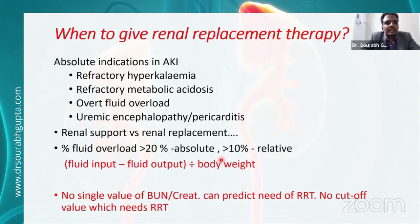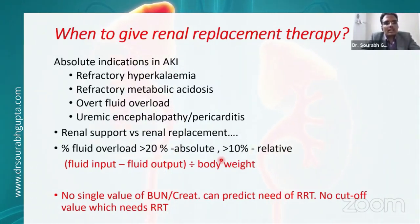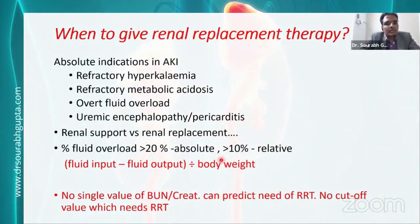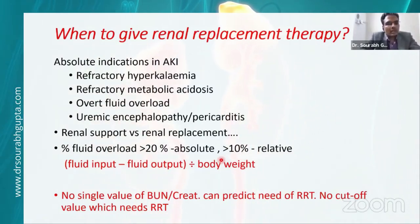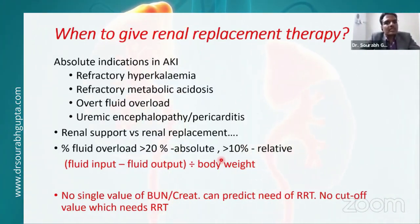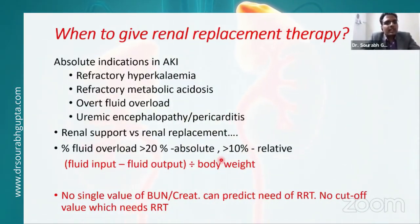Absolute indications for renal replacement therapy are classically: refractory hyperkalemia, metabolic acidosis, overt volume overload, uremic encephalopathy, and in chronic cases pericarditis. There is now a concept of renal support instead of renal replacement. In the pediatric population, a percentage fluid overload of more than 20% — calculated as total fluid input minus output since admission divided by body weight — is an absolute indication for RRT; more than 10% is a relative indication. There is no single value of BUN or creatinine that can predict the need for RRT, and neither is there any cutoff that mandates it.